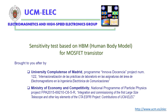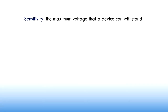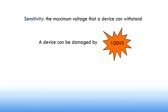In this video we are going to make a sensitivity test to an electronic device based on HBM, human body model. We define sensitivity as the lowest voltage that can change the characteristics of a device — that is, the maximum voltage that the device can withstand. Electronic components can be damaged with just 100 volts, so it is really important to perform sensitivity tests.